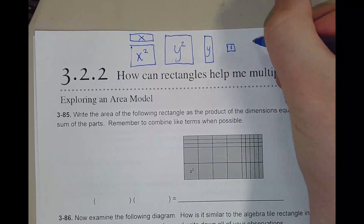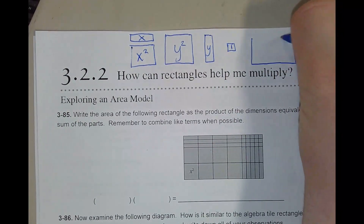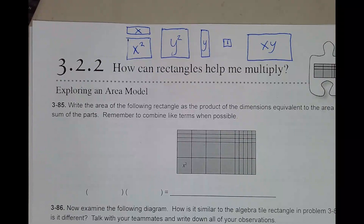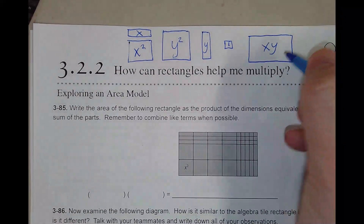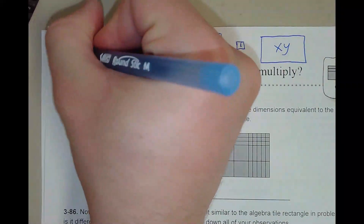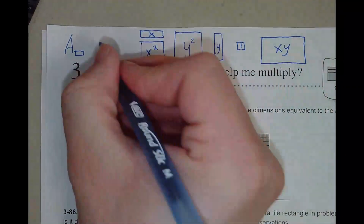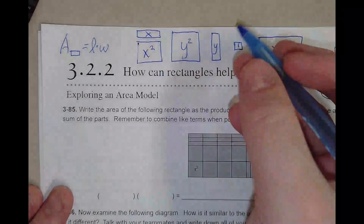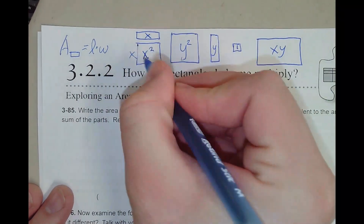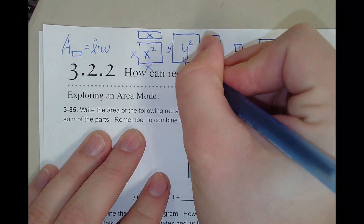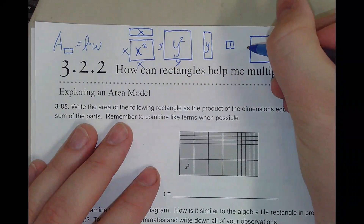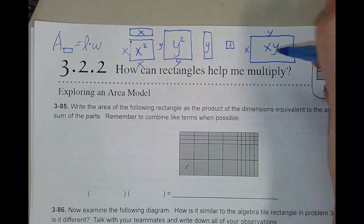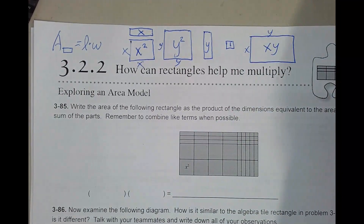We also have a one-by-one tile — the one tile — and an xy-tile. Remember, the name of the shape is its area, meaning the area of that rectangle is simply length times width. If it's x times x, that's x-squared. If it's y times y, that's y-squared. And if it's x times y, where y is the longer side, we get xy. That's the name of the tile.